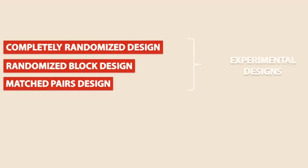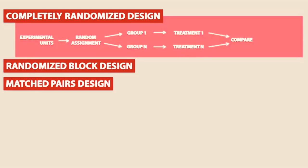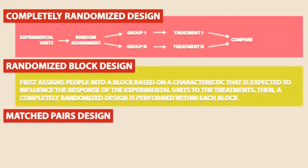Let's quickly recap. In a completely randomized design, each experimental unit is randomly assigned to a group to receive a different treatment. In a randomized block design, we first assign people into a block based on a characteristic expected to influence their response to the treatments, and then a completely randomized design is performed within each block.